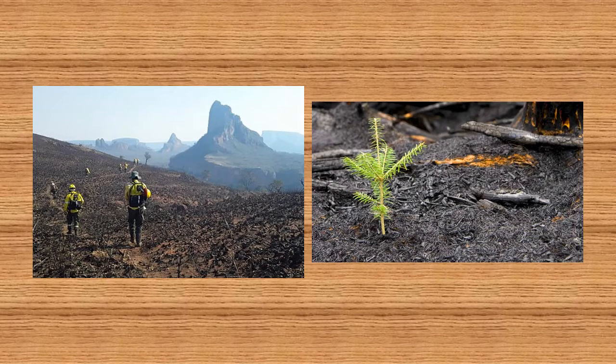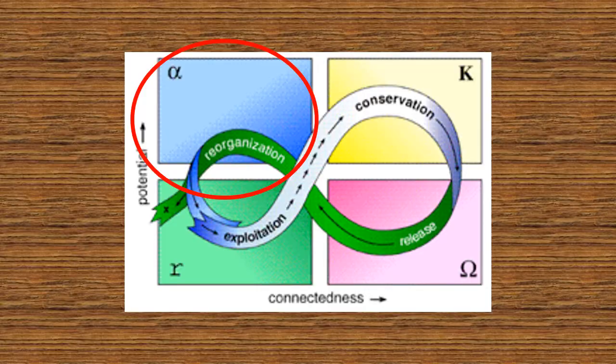This becomes the reorganisation phase. The reorganisation phase begins to sort out the emerging drivers of the new system and is also known as the Alpha stage. It eventually leads back to the beginning of the exploitation phase, completing the cycle.